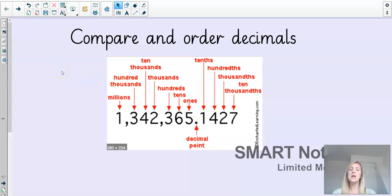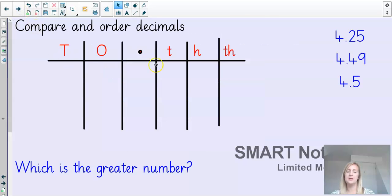Just press pause, and when you're ready, restart, and you can carry on with me. OK, so comparing and ordering decimals. So on the right-hand side of my screen here, I've got three decimals, 4.25, 4.49, and 4.5. And we are going to order them from the smallest number to the greatest number. We're going to use this place value chart here to help us do that, and then we're going to answer this question at the end of which is the greater number.